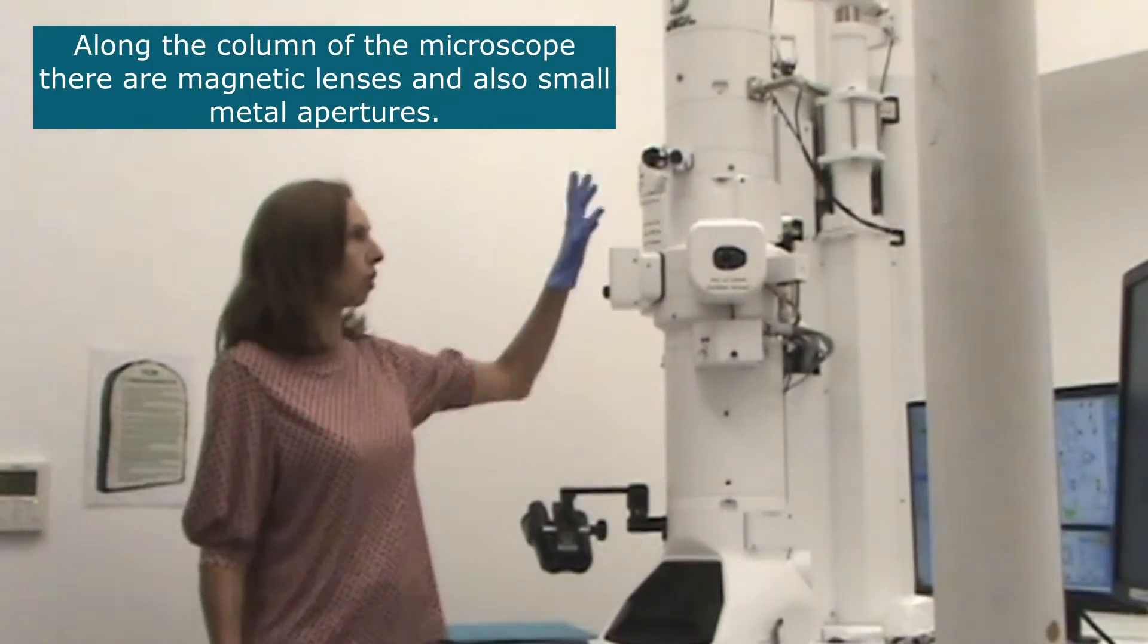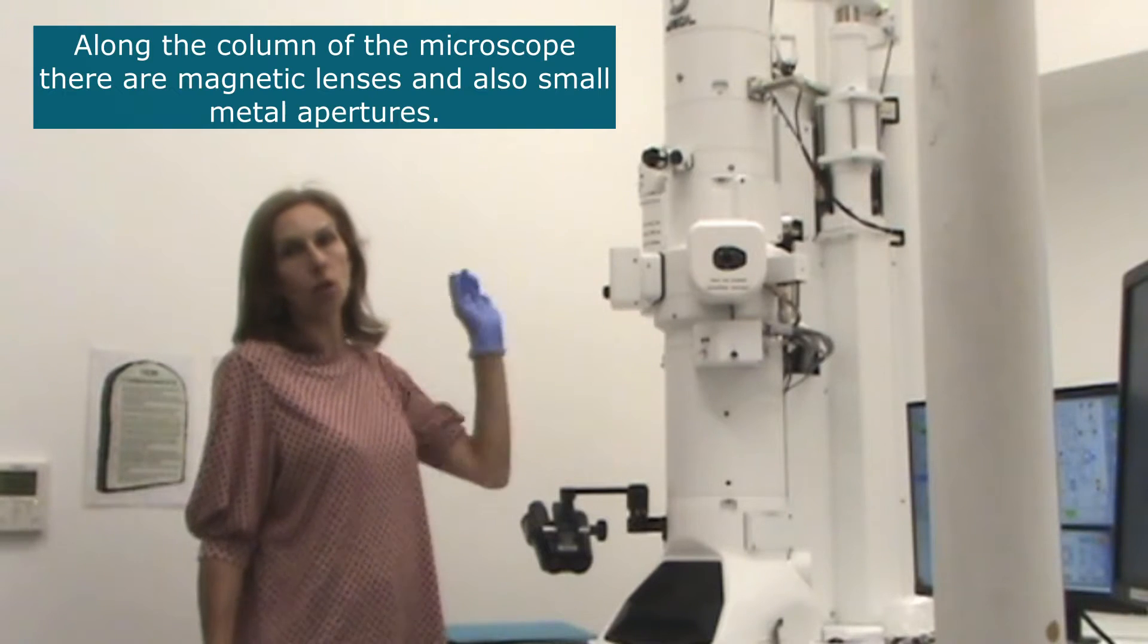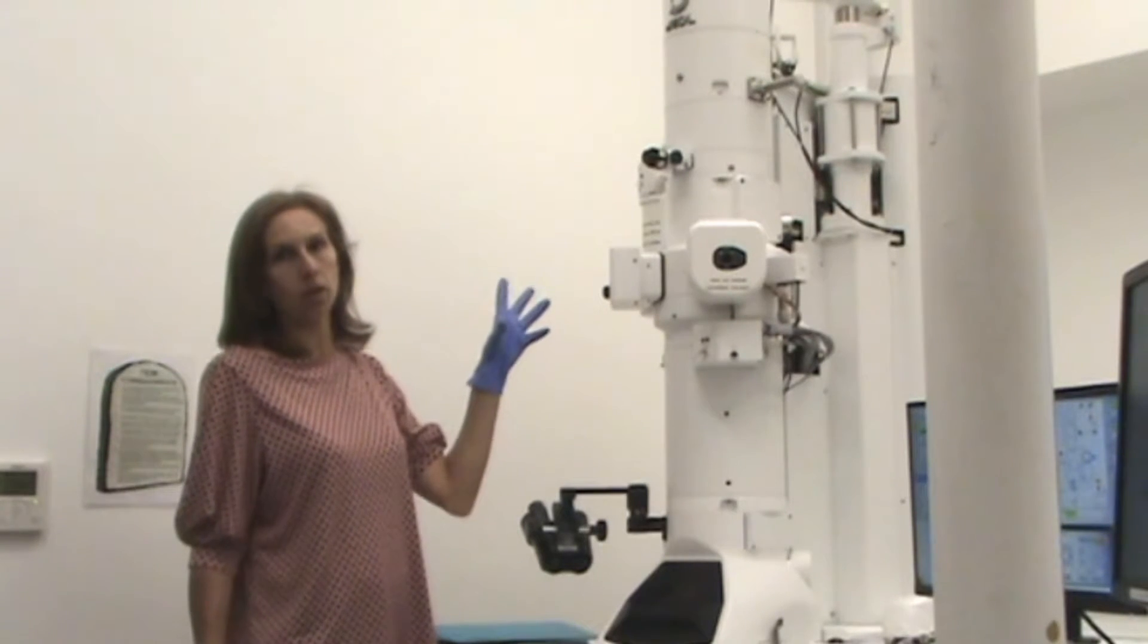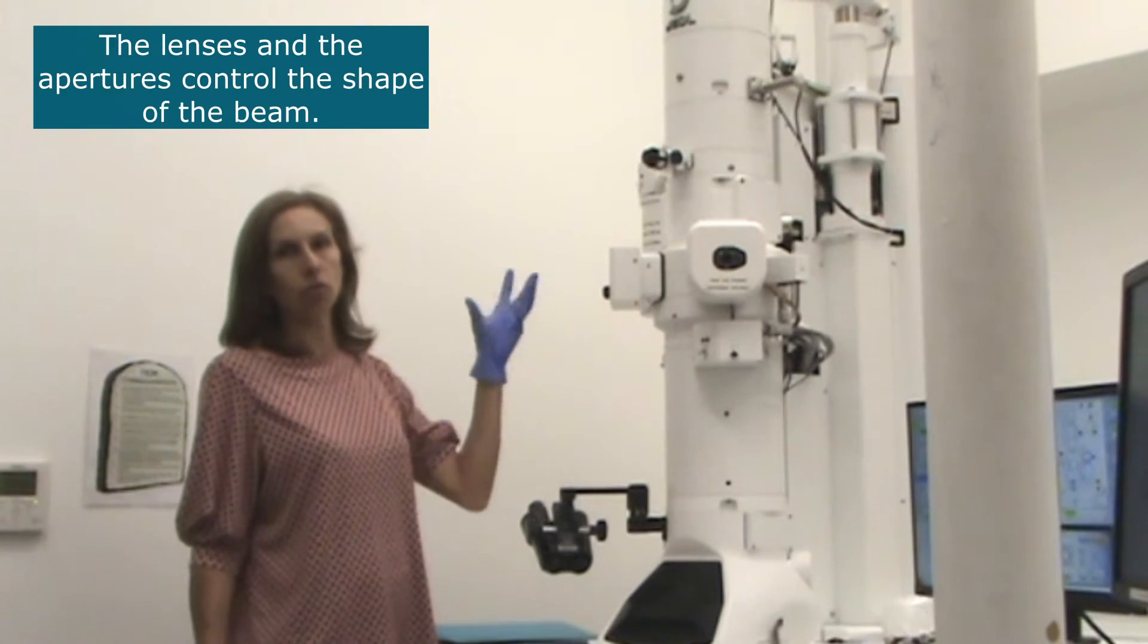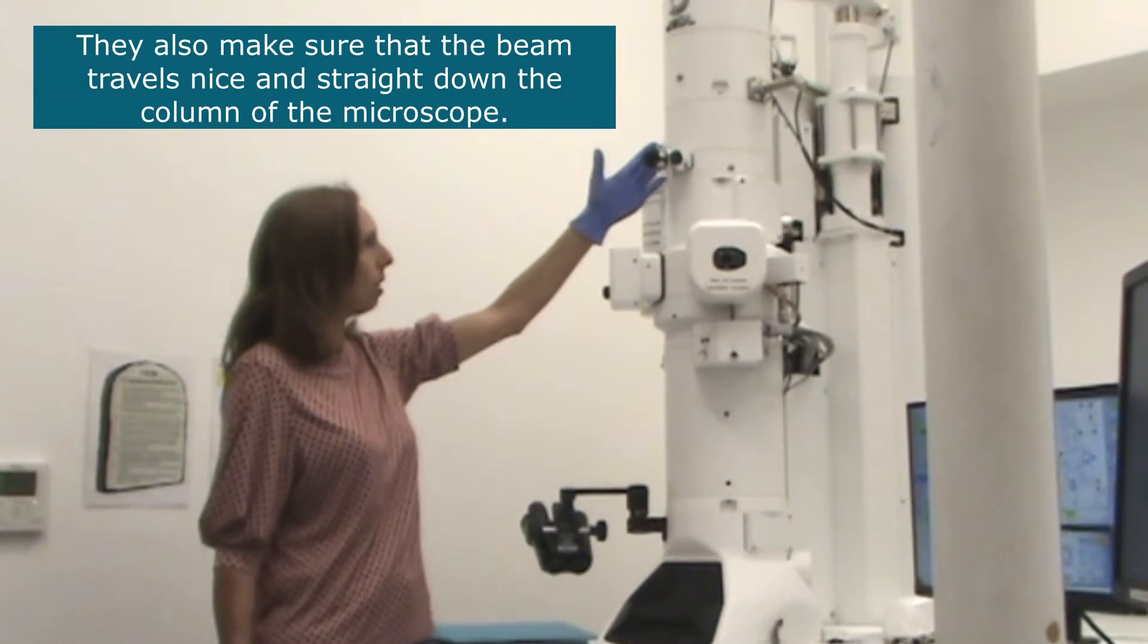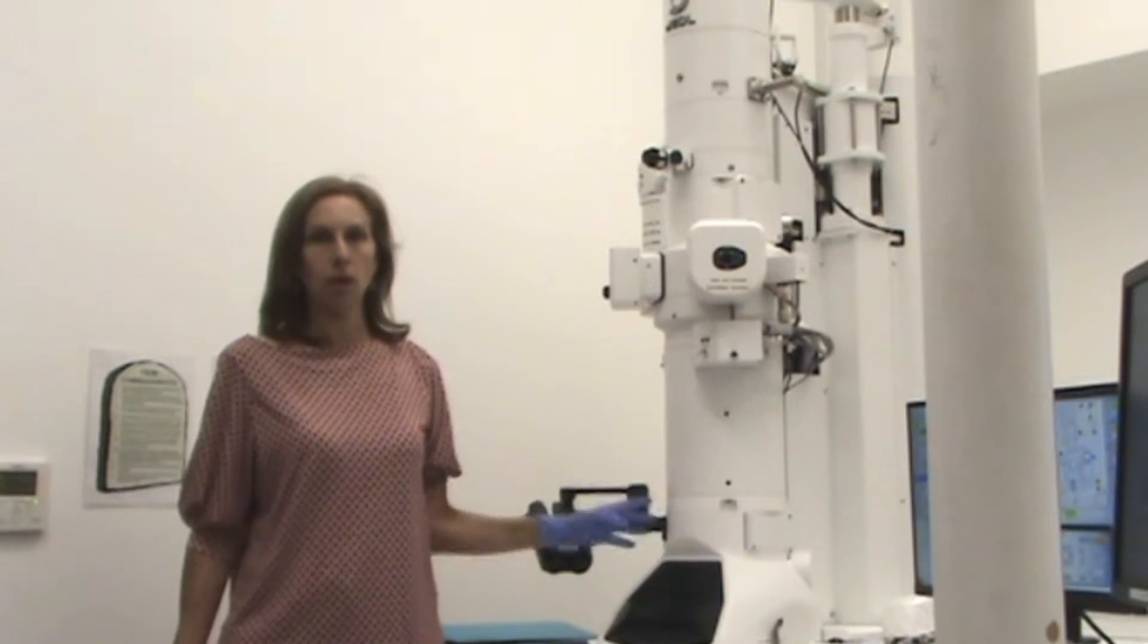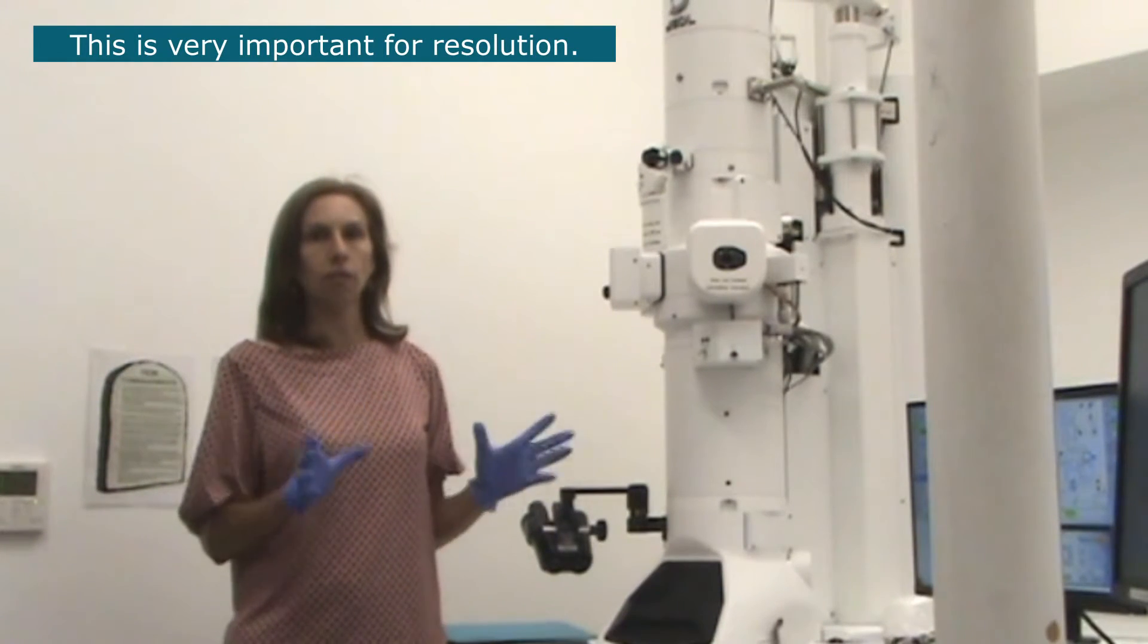Along the column of the microscope here and here there are magnetic lenses and also small metal apertures. The lenses and the apertures control the shape of the beam and they make sure that the beam travels nicely straight down the column of the microscope. This is very important for resolution.